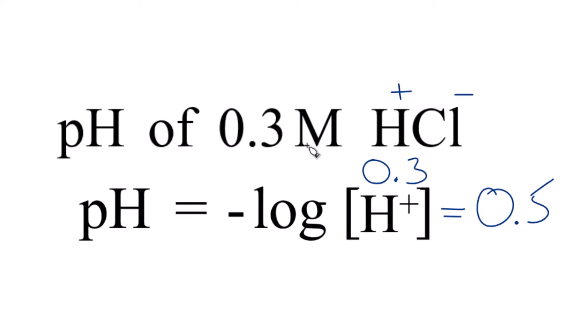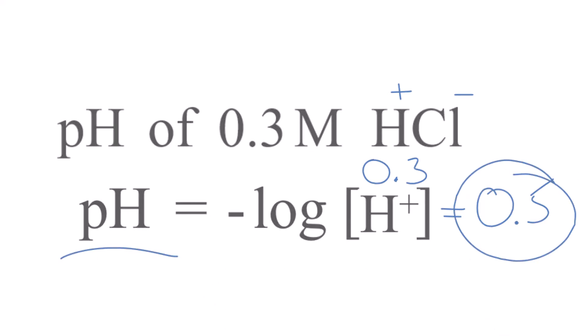This is Dr. V finding the pH of a 0.3 molar of HCl. It's 0.5. That's our pH. Thanks for watching.